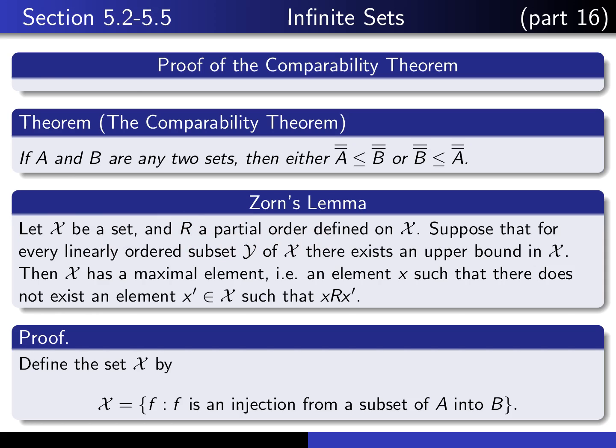We're going to take X to be the set of all functions having a domain which is some subset of A, and codomain B, such that F is an injection. What we really want to show is that in this set X, there exists either an element F having a domain which is all of A, or a range that's all of B. Because if there existed an F with domain all of A, then we would have our injection from A into B.